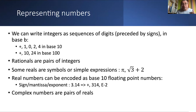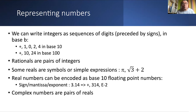For numbers, as long as you consider only integers, you can represent them as sequences of digits preceded by a sign in some base. So 1024 in base 10 could be written as five words: plus, 1, 0, 2, 4. If that's too long, just use a higher base — base 100 would give 'plus 10 24'. Once you know how to do integers, you can do rationals as pairs of integers. The difficulty comes with real numbers: some are symbols like pi or square root of 3, but most real numbers can't have all their digits enumerated — so you encode them as floating point numbers, typically with three tokens: a sign, a mantissa, and an exponent.